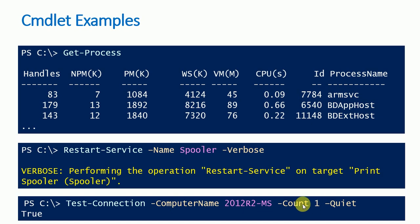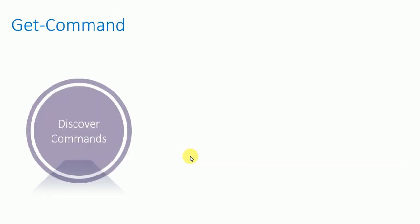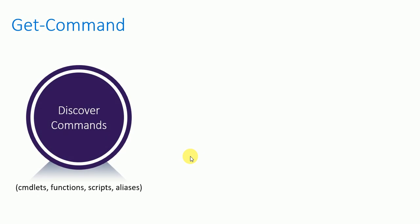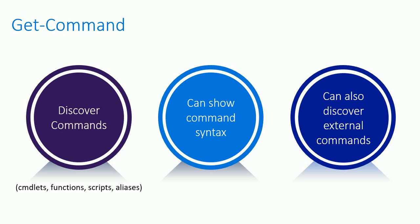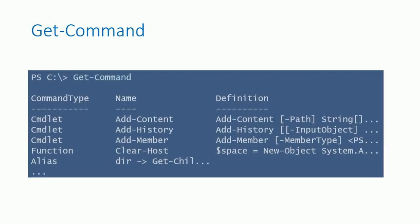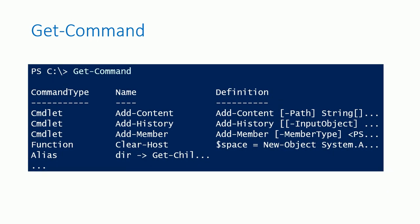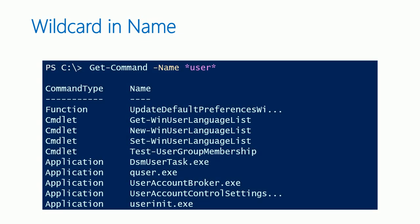Get-Command discovers commands including cmdlets, functions, scripts, and aliases, shows cmdlet syntax, and can also discover external commands like .exe, .cpl, and .msc files. To see all available commands, just run Get-Command. To filter, use: Get-Command -Name *service* with a wildcard. You can filter by name using wildcards like *users* or *service*.